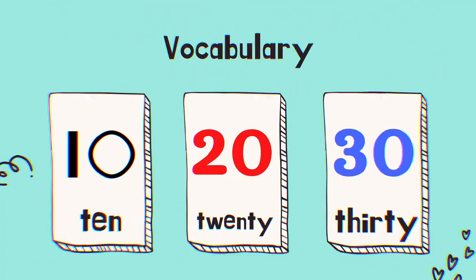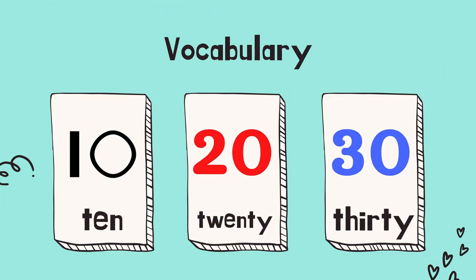First of all, let us look at the vocabulary. Look at the numbers here. We are going to learn numbers in tens. First, ten. T-E-N, ten. Twenty. T-W-E-N-T-Y. Twenty. Thirty. T-H-I-R-T-Y. Thirty.